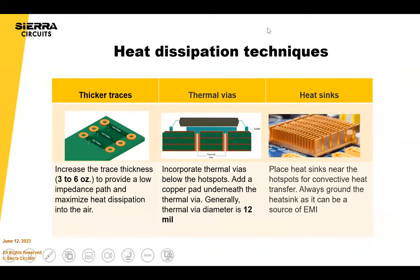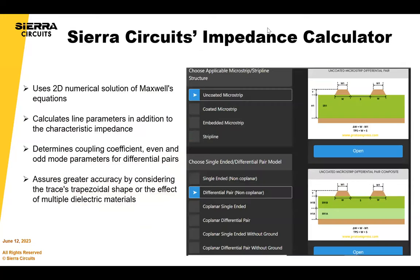For heat dissipation, incorporate wide and heavy traces. We're comfortable up to 4-ounce copper; 5 and 6-ounce copper are special boards with very specific requirements that require a fabricator conversation. Stack-up materials between thick copper layers really matter for predicting press-out, and via sizes need to be as large as possible to handle drilling through heavy copper. There are many considerations when you have a heavy copper requirement.